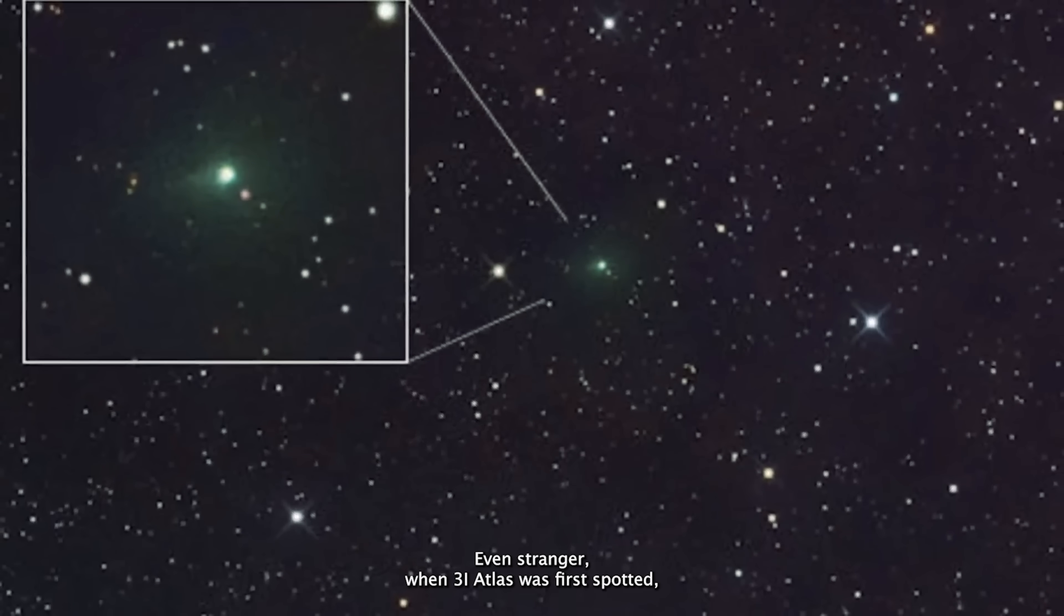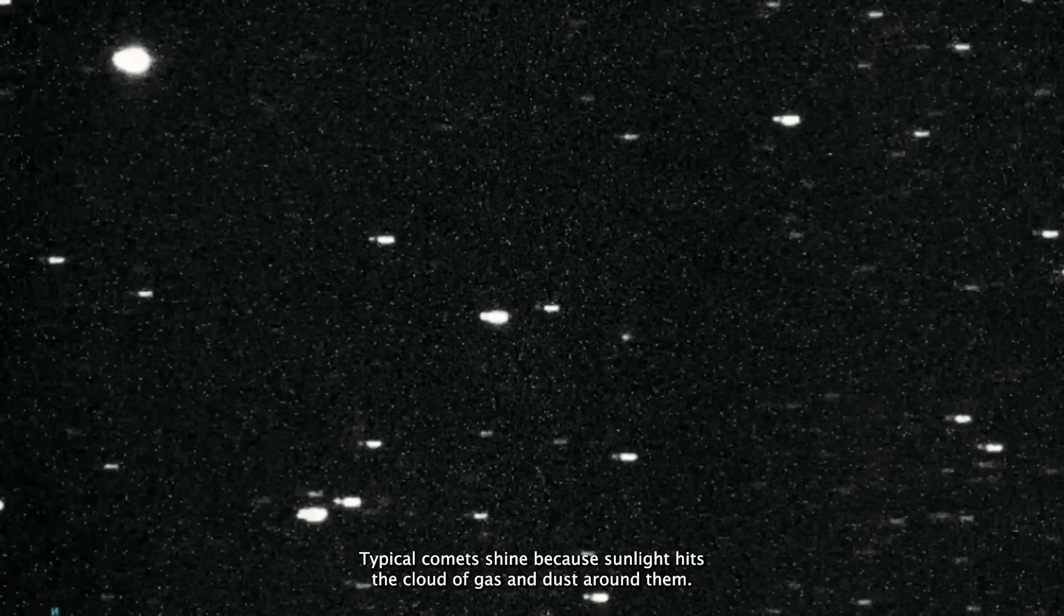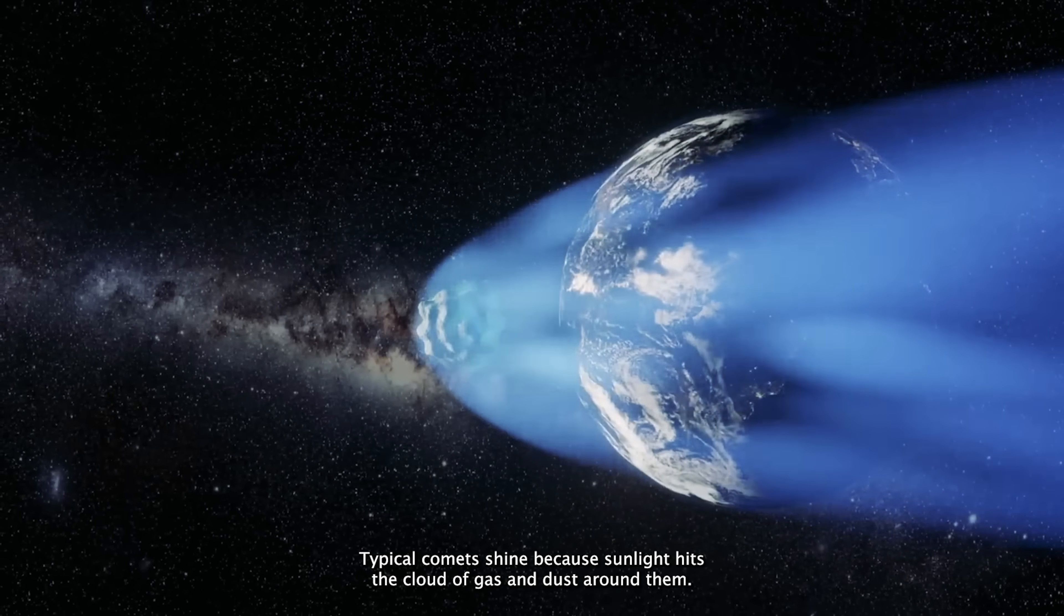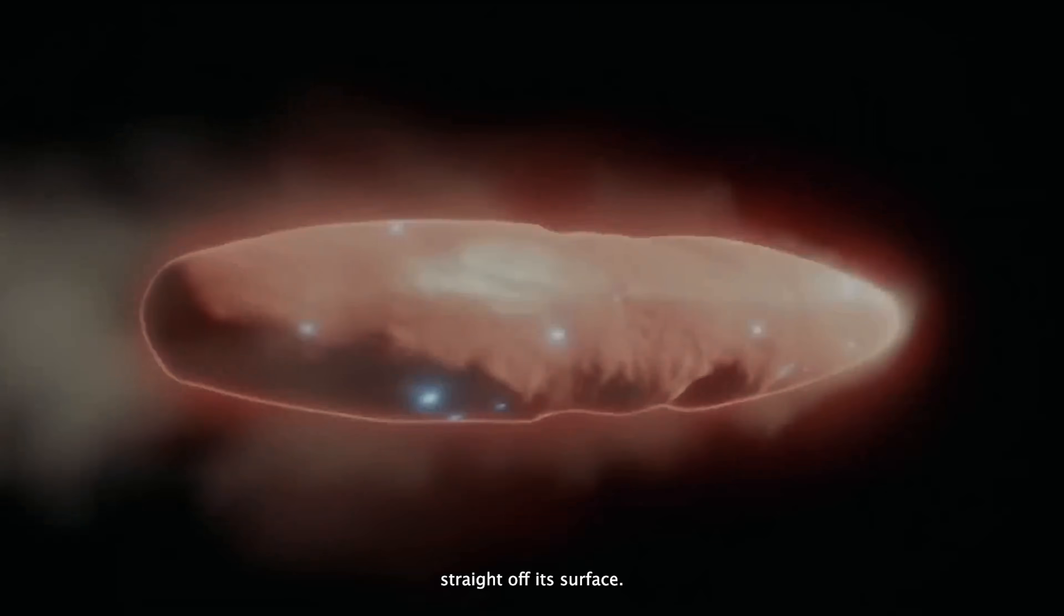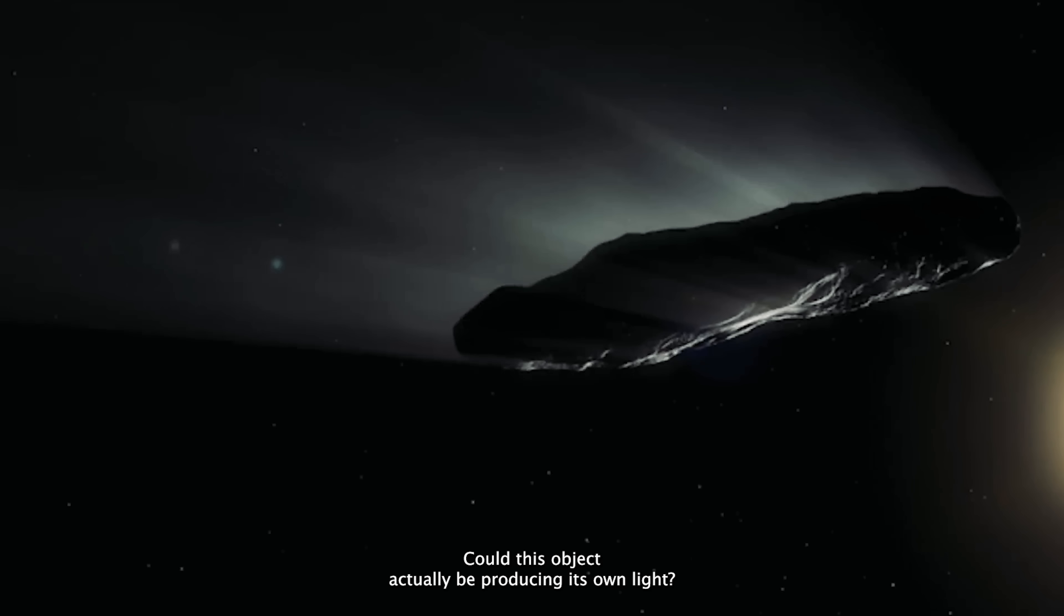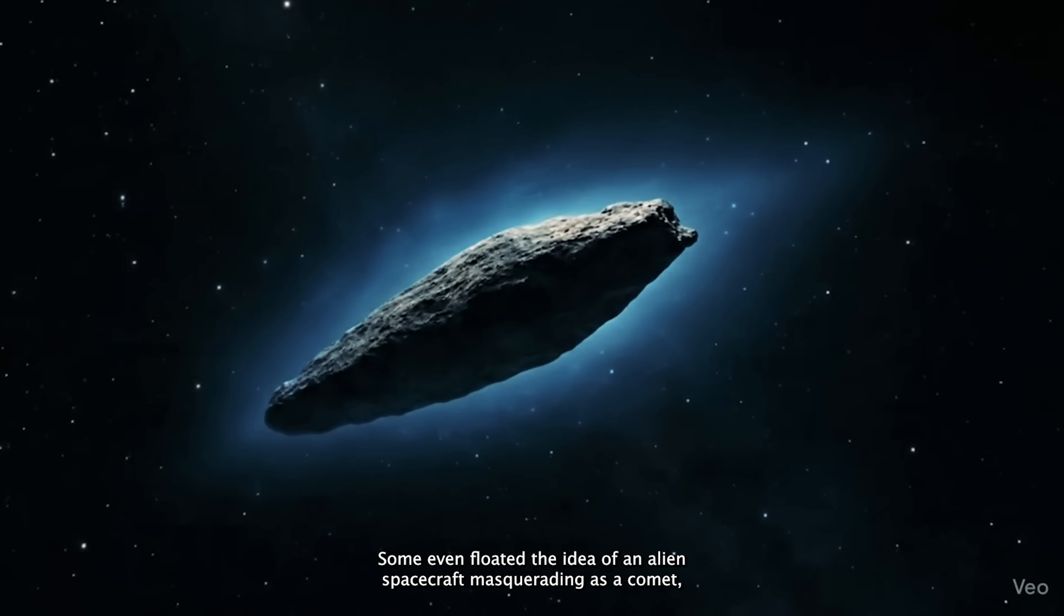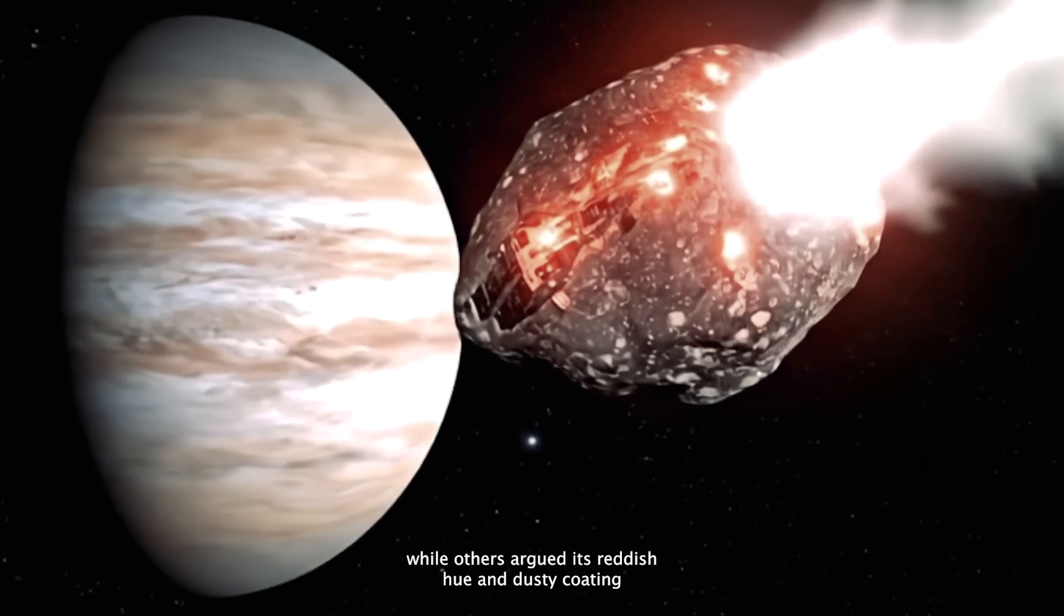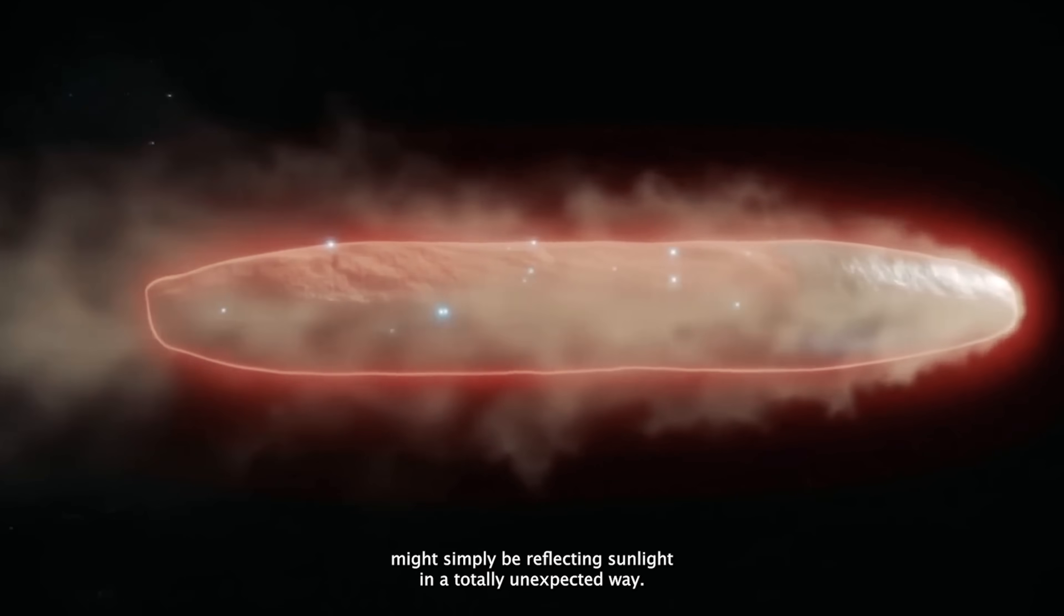Even stranger, when 3i Atlas was first spotted, it didn't resemble a normal comet at all. Typical comets shine because sunlight hits the cloud of gas and dust around them, but the light from this visitor seemed to shine straight off its surface. That sparked a big question. Could this object actually be producing its own light? Some even floated the idea of an alien spacecraft masquerading as a comet, while others argued its reddish hue and dusty coating might simply be reflecting sunlight in a totally unexpected way.